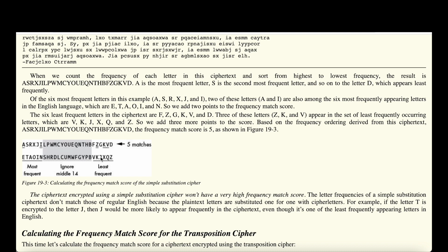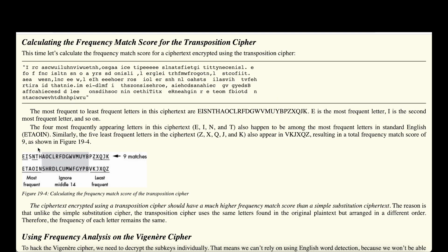In general, a ciphertext encrypted using the simple substitution cipher won't have a very high frequency match score, because the plaintext letters are substituted one-for-one with cipher letters. For example, if we take T — one of the most frequently occurring letters in English — and swap it with J using the substitution cipher, then wherever we used T before we now use J, so the score is much lower.